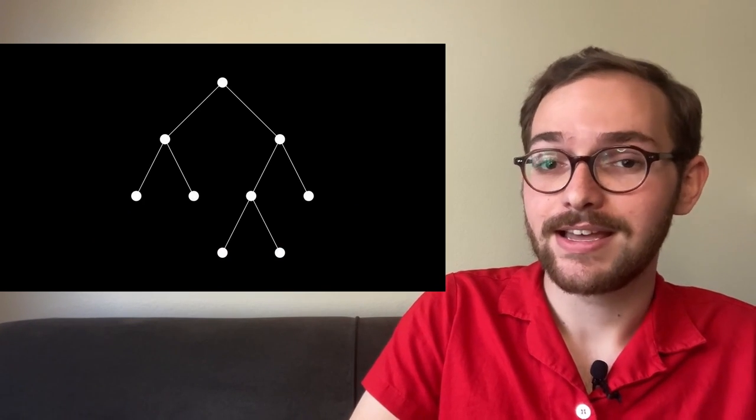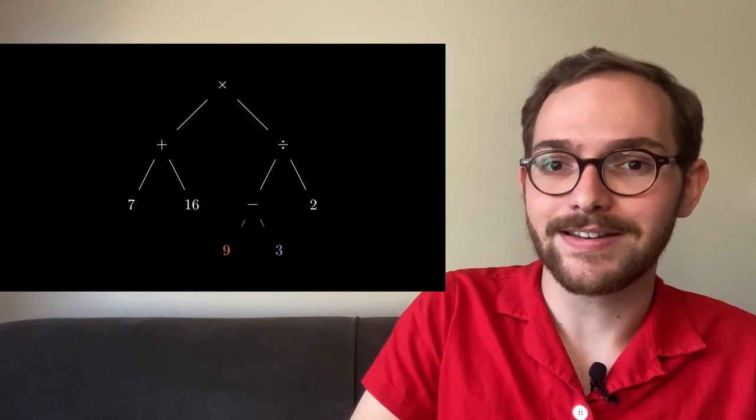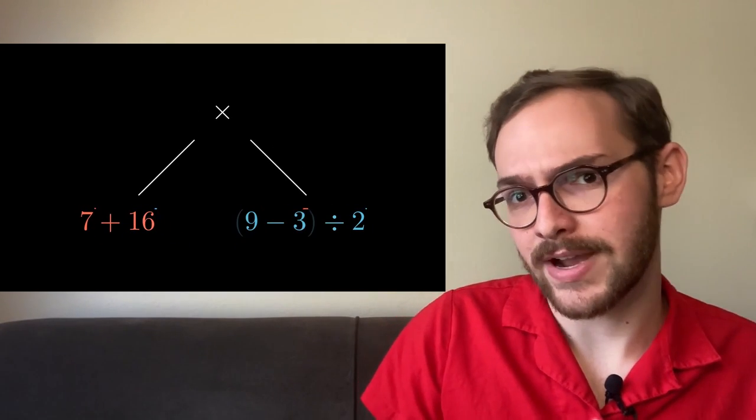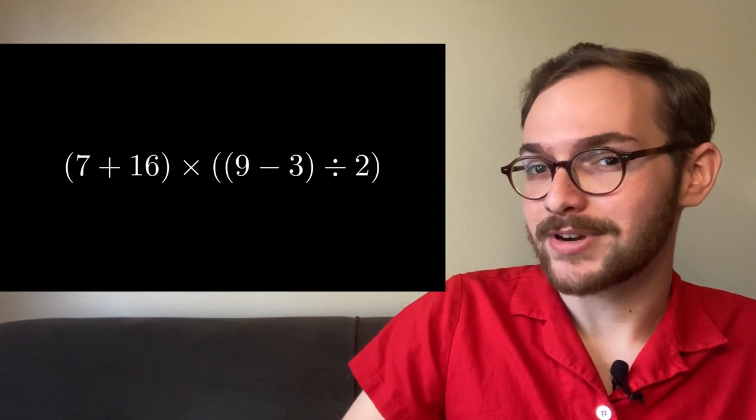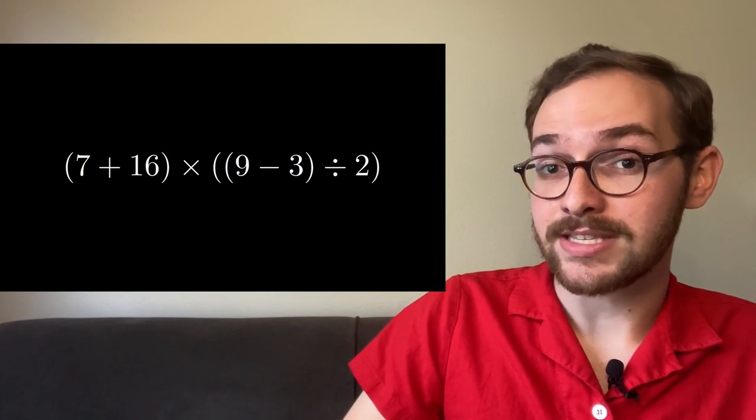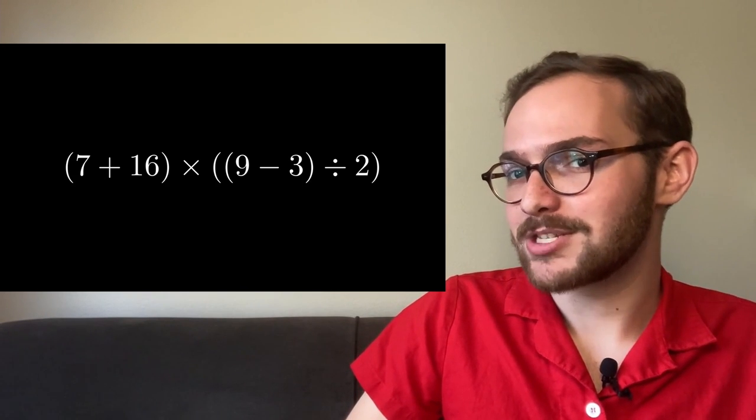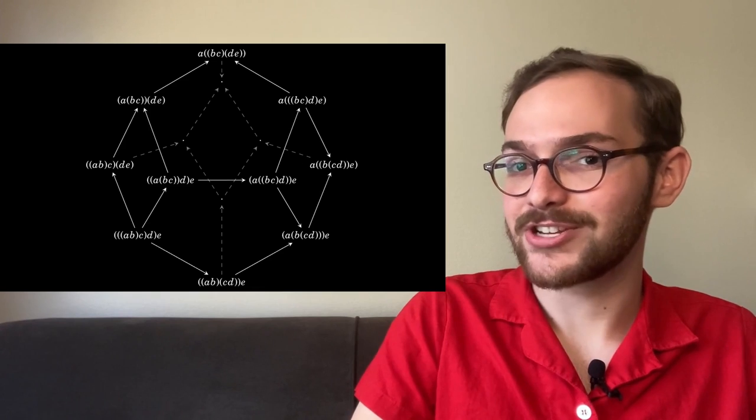Going from a tree back to a parenthesized expression is just as easy. Label the nodes in your tree from left to right with the symbols in your expression. Then at each node, make its left expression its left child and its right expression its right child. Since we have a correspondence between parenthesizations with n operations and full binary trees with 2n+1 nodes, we know there must be C_n ways to parenthesize an expression.